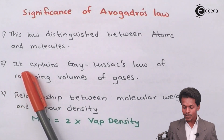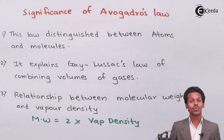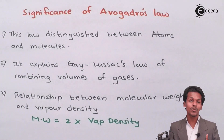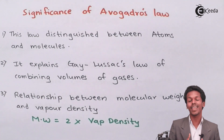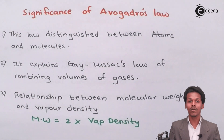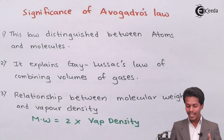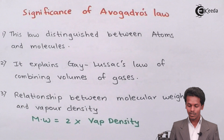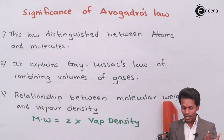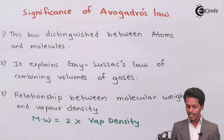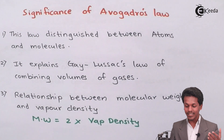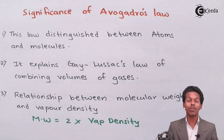The second significance is that it explains Gay-Lussac's Law of combining volumes of gases. Since Gay-Lussac's Law is concerned with STP, and Avogadro's Law is also concerned with STP, both relate to the volume of gases. The third significance is that it gives a relationship between molar weight, that is molecular weight, and vapour density — specifically that molecular weight equals two times the vapour density. These are three key significances of Avogadro's Law, which plays a vital role in calculating the number of particles of gas molecules.